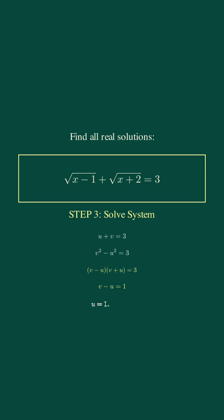linear system: u equals 1, v equals 2. Back substituting: square root of x minus 1 equals 1, so x equals 2. Verification: square root of 1 plus square root of 4 equals 3. Perfect! Your challenge: solve square root